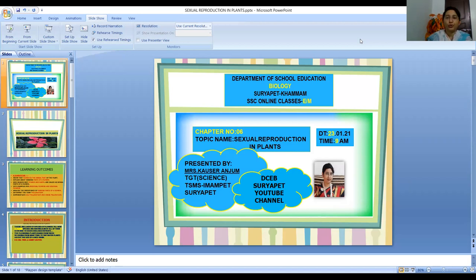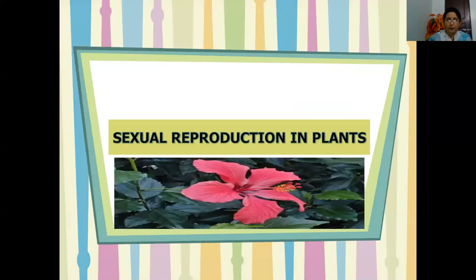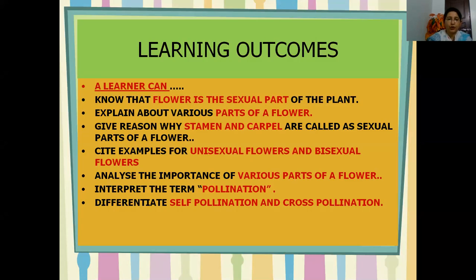Today I am going to discuss the topic Sexual Reproduction in Plants. When I finish my class, you will know that the flower is the sexual part of a plant. You will be able to explain various parts of a flower and give reasons why stamen and carpel are called sexual parts. You can cite examples for unisexual and bisexual flowers, analyze the importance of various parts, interpret the term pollination, and differentiate self-pollination and cross-pollination.